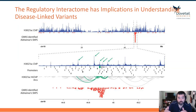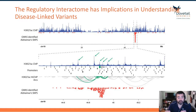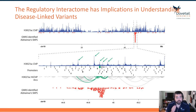Now we can go into the SNP data — those red bars in the plot at the very bottom — and say that any SNPs occurring over these ApoE enhancer regions could actually be engaged with ApoE.